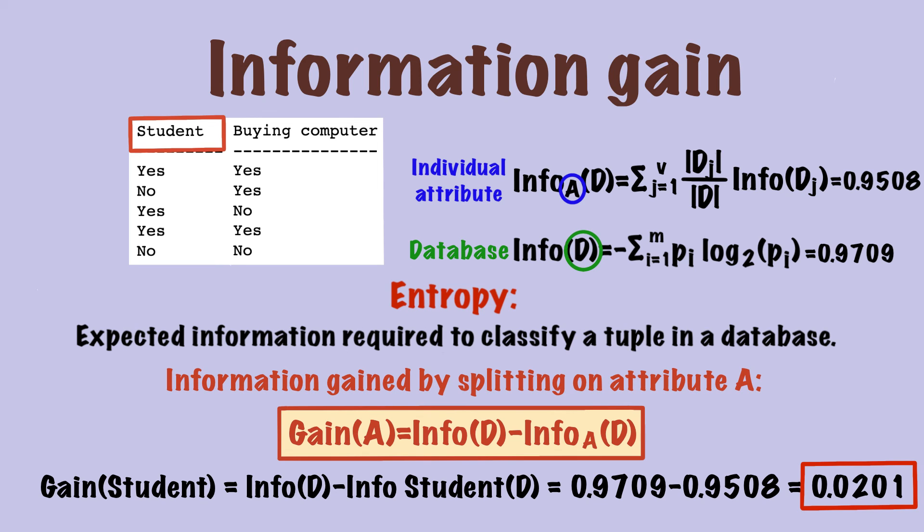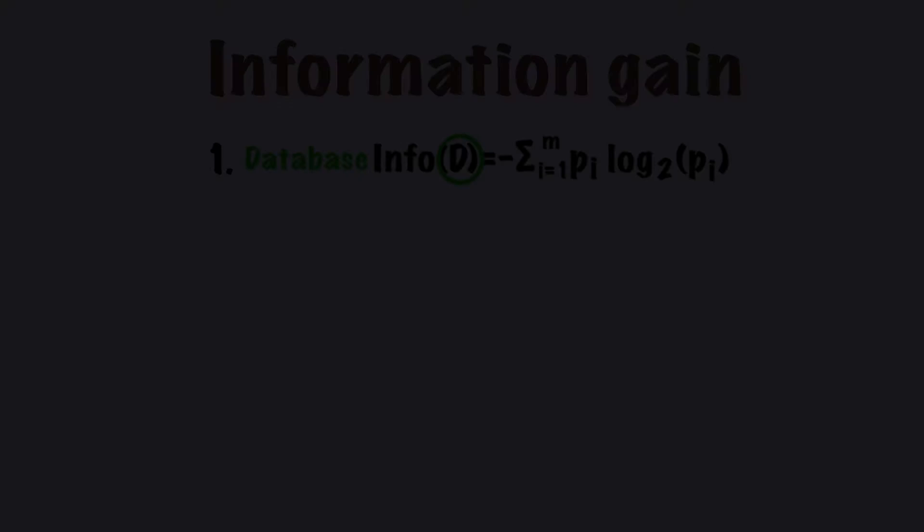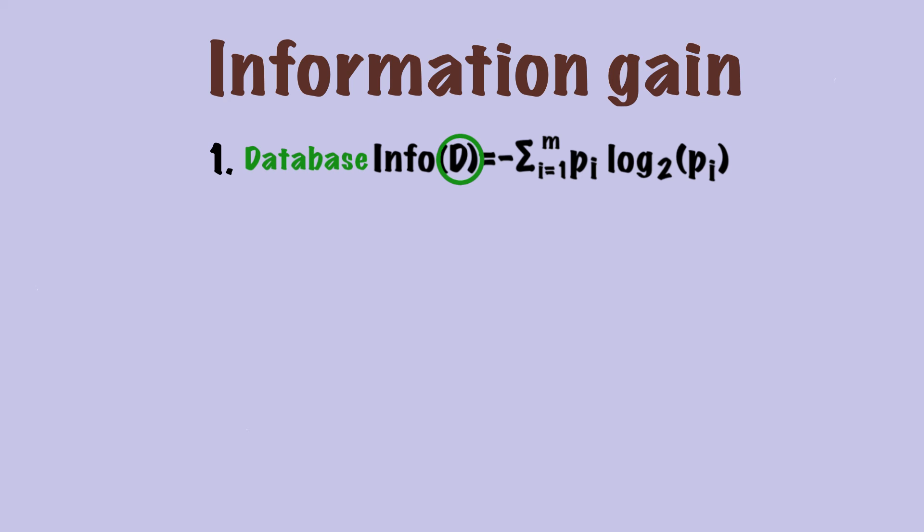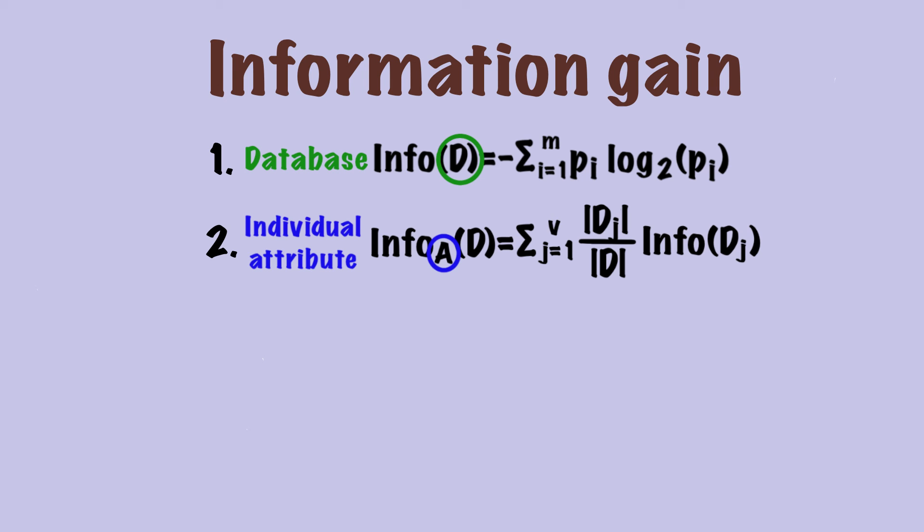That's how we calculate the information gain manually, but I want to go through the whole process again. To get the information gain, the first step is to calculate the entropy of database, where we only need to use the target attribute. The second step is to calculate the entropy of individual attributes. Here we need both the attribute A and the target attribute, and A cannot be the target attribute. Then, we just deduct the entropy for A from the entropy for the whole database, and we get the information gain for attribute A.